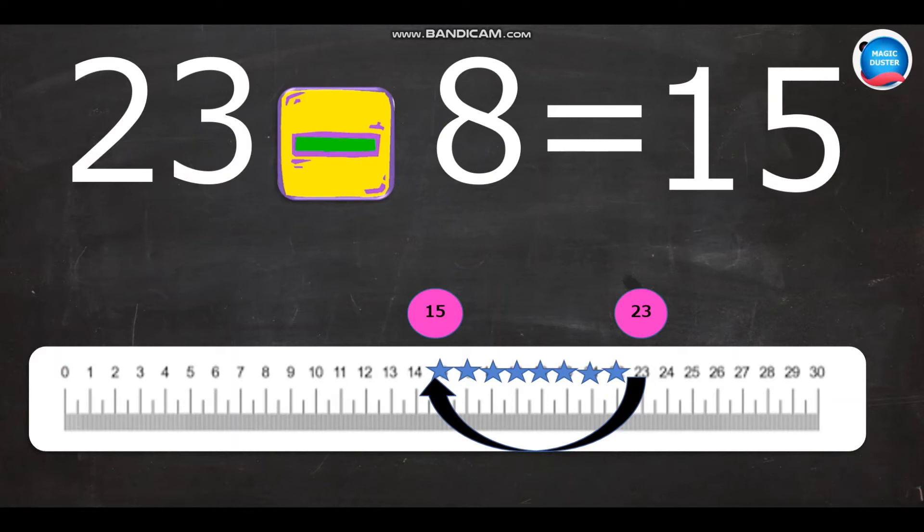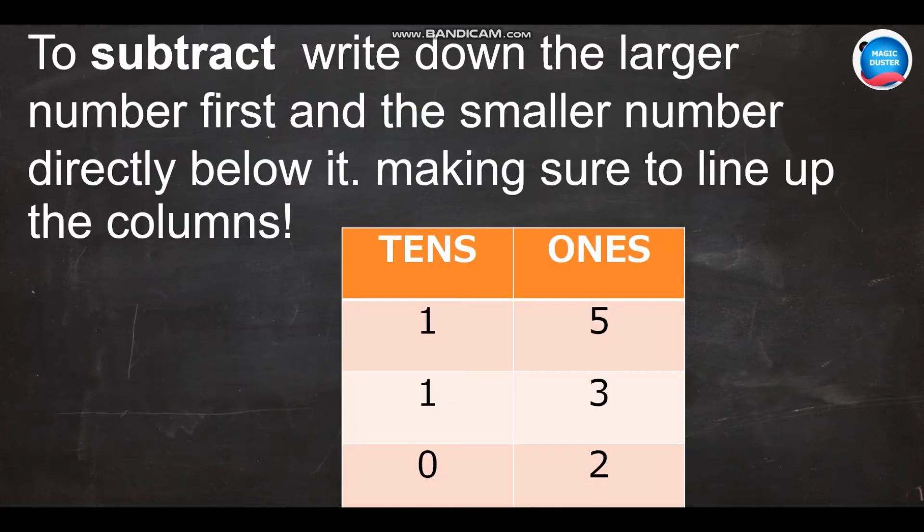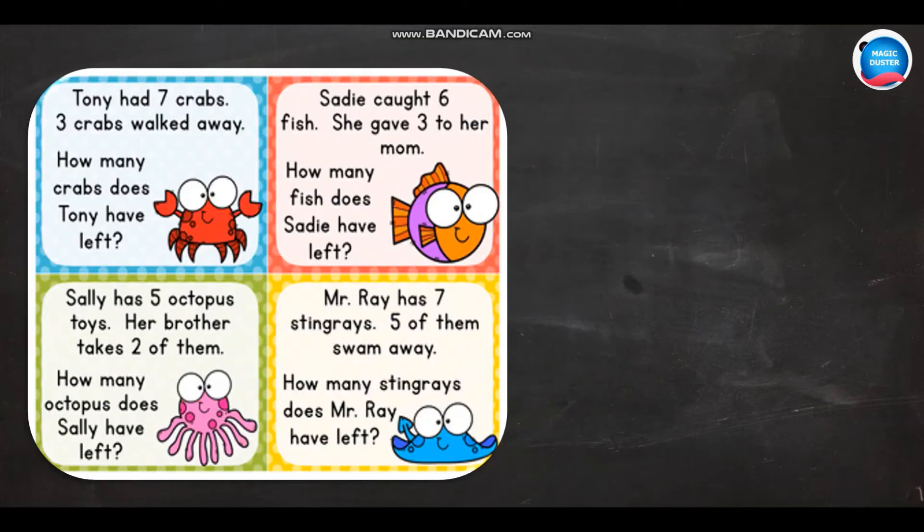And always remember, when we are going to do subtraction, write down the larger number first and the smaller number directly below it, making sure to line up the columns because each column has a separate value. Let us solve some exercises. Here, we have four basic questions related to aquatic animals.